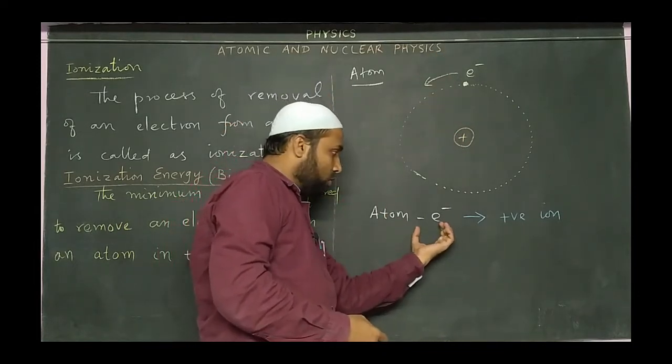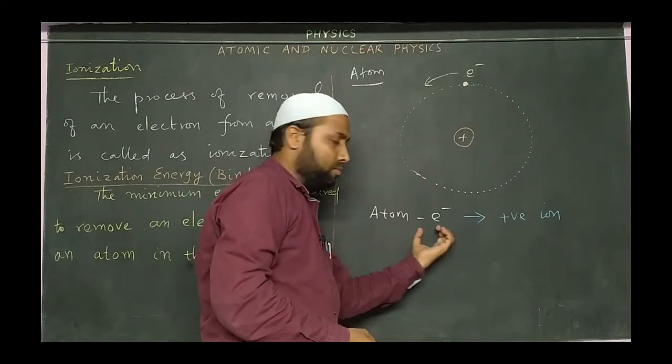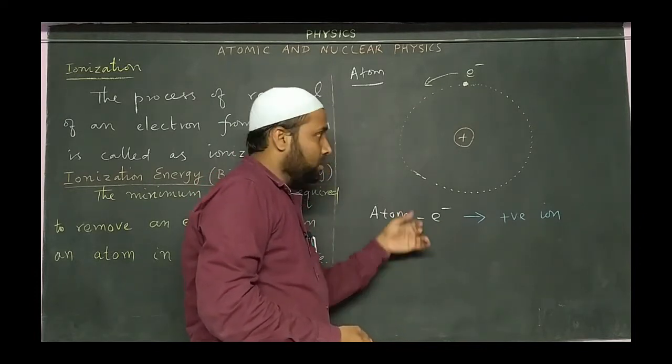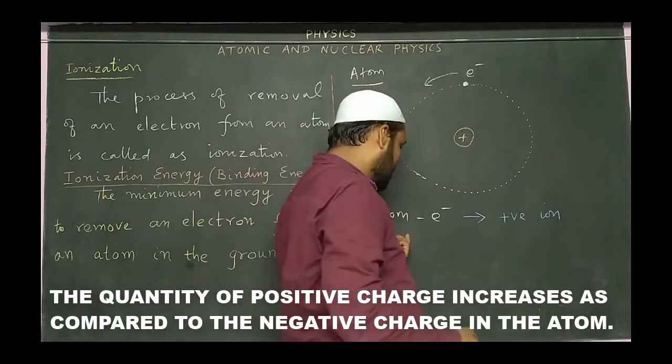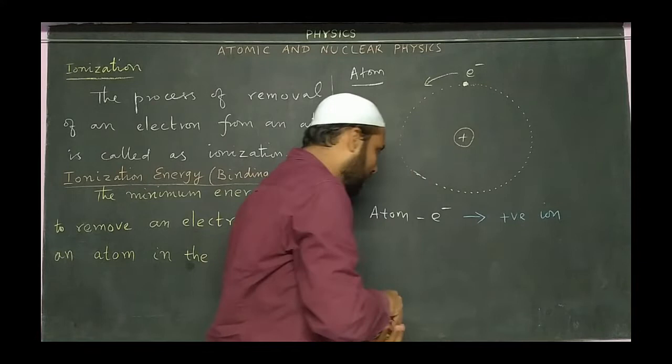When we remove an electron from an atom, the amount of positive charge increases. As a result, that atom turns into a positive ion.